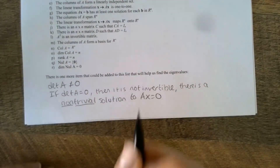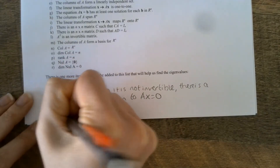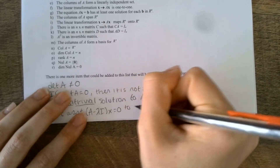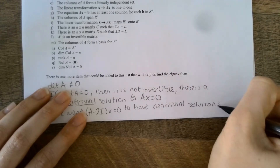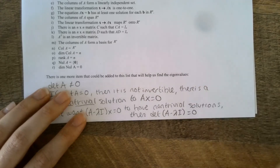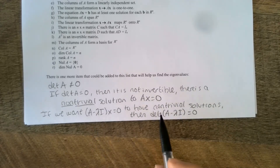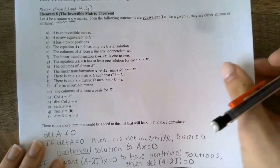So if I can prove that A minus lambda I has a determinant of zero, then I can prove that I will get non-trivial solutions. And that's how we're going to force that to be true in order to find the eigenvalues. Conclusion: if we want A minus lambda I times X equals zero to have non-trivial solutions, then the determinant of A minus lambda I should be equal to zero. This is all coming from our invertible matrix theorem — the idea that the determinant equal to zero means this is non-invertible, aka free variables.